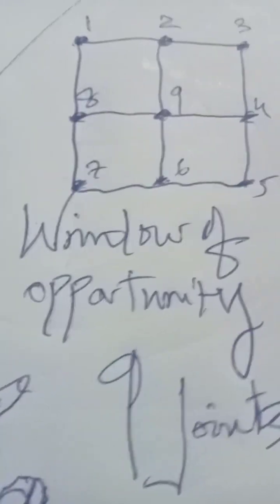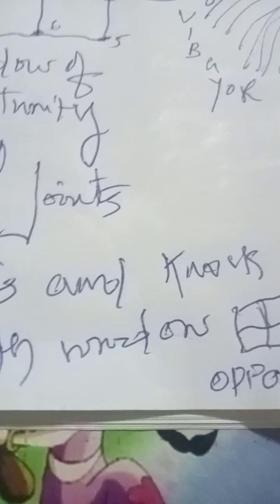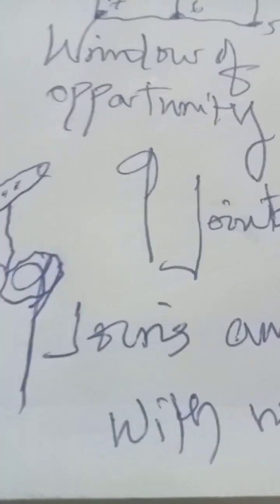The one joins with the six, there is a symmetry, there is a window of opportunity as WIN and DOW join together. And when there is a window of opportunity, the nine joins and knock knocks on the door of opportunity.